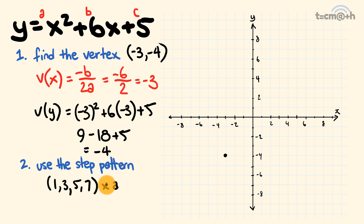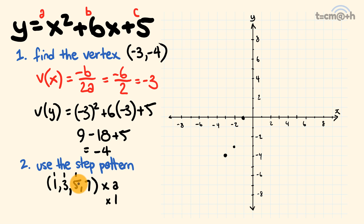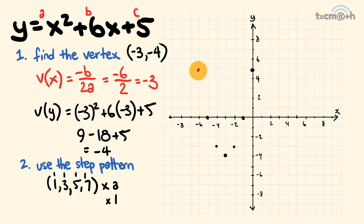From the vertex, we move 1 across and 1 up, then 1 across and 3 up, then 1 across and 5 up, and 1 across and 7 up — though we're going to run out of space for that last one. We do the same going in the opposite direction: back 1 and up 1, back 1 and up 3, back 1 and up 5. So we can now see the bare bones of our parabola.